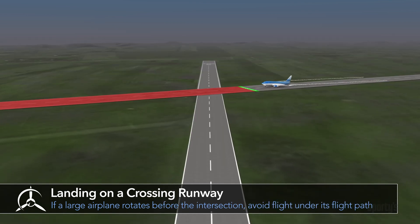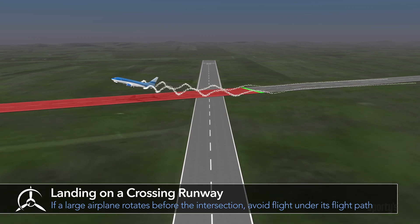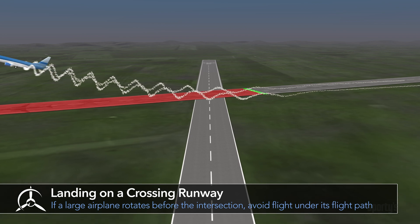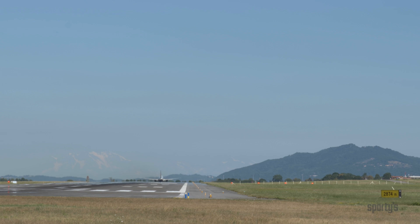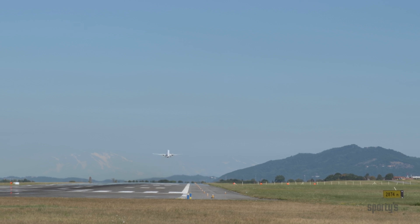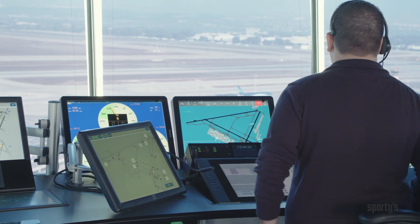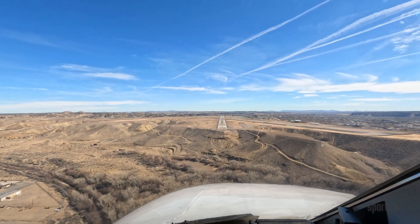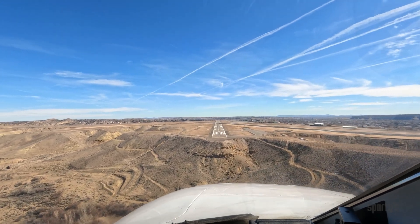If it rotates before the intersection, avoid flight under the large airplane's flight path. If you cannot land before the intersection, plan to go around. If possible, allow at least three minutes to elapse before taking off or landing behind a large airplane to allow the turbulence to subside. You can also expect airport controllers to advise of the possibility of wake turbulence. Whether they do or not, you are expected to adjust your flight path as necessary to avoid wake turbulence.